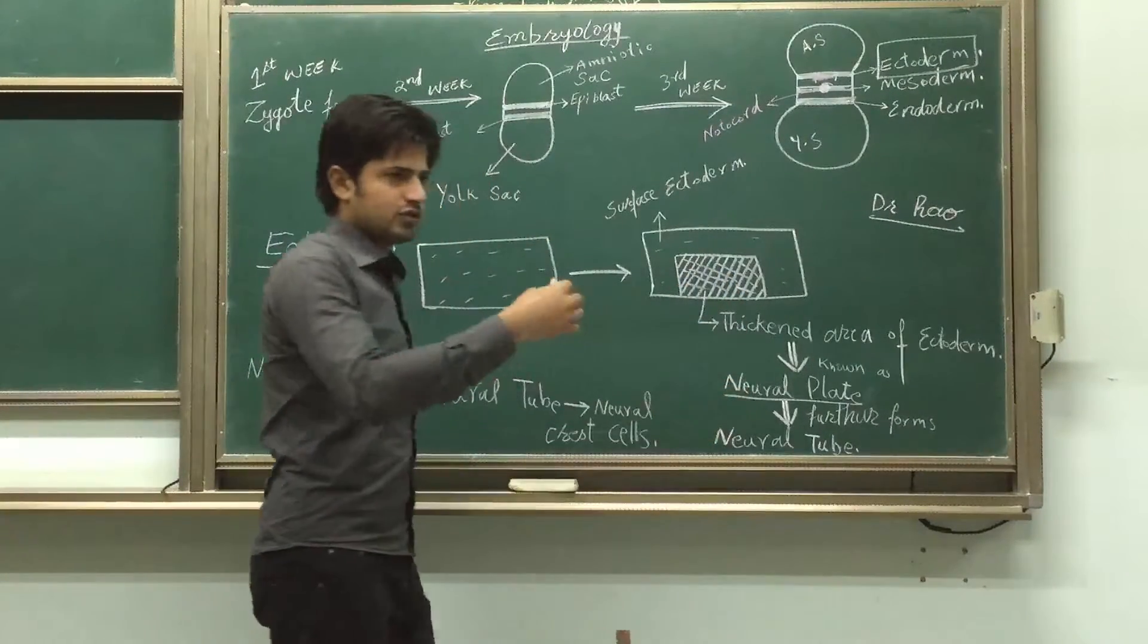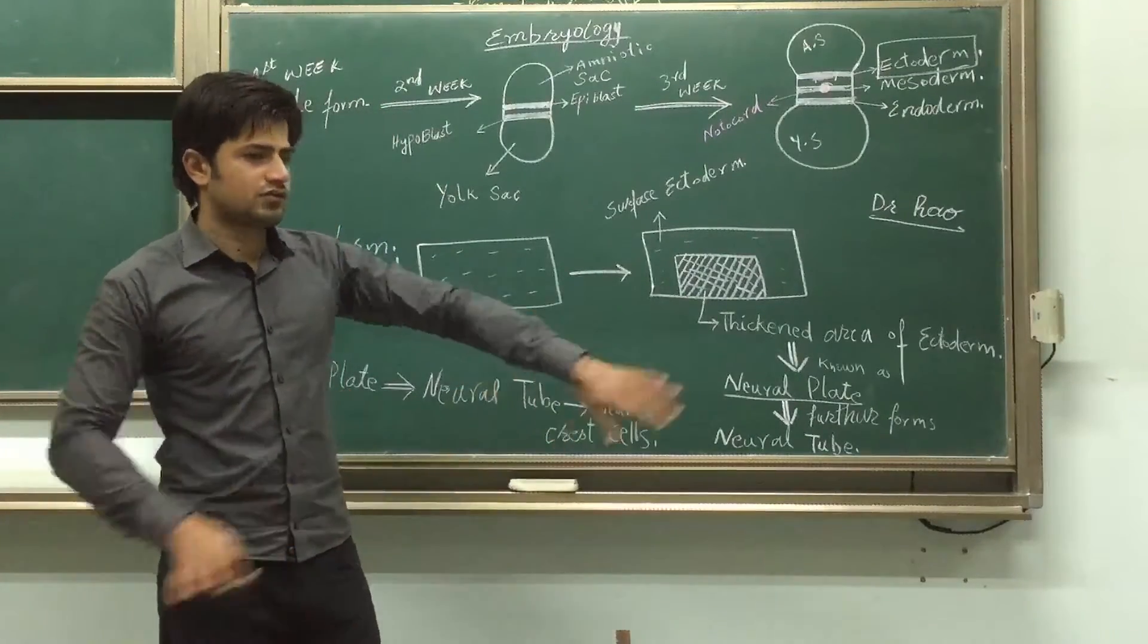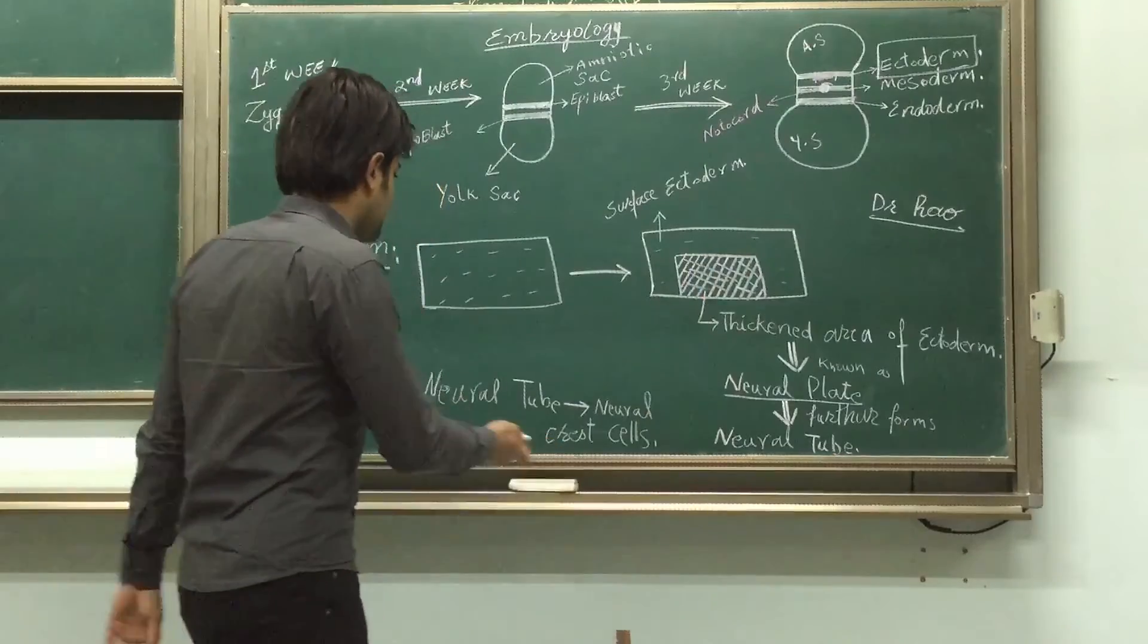That neural plate is going to form the neural tube, and from the neural tube some cells are excreted and transferred to the body. These cells are called neural crest cells.